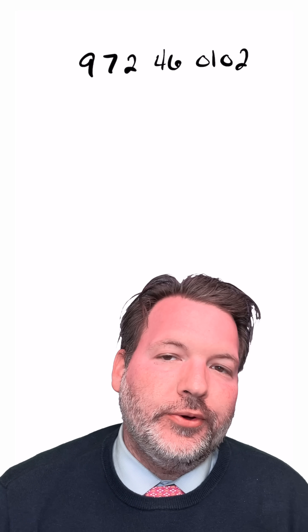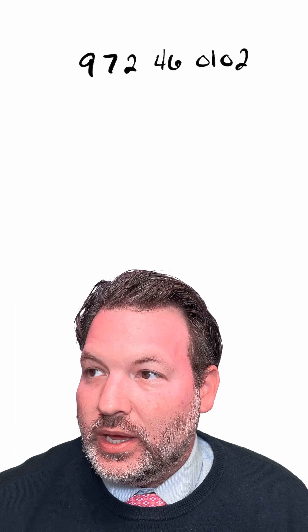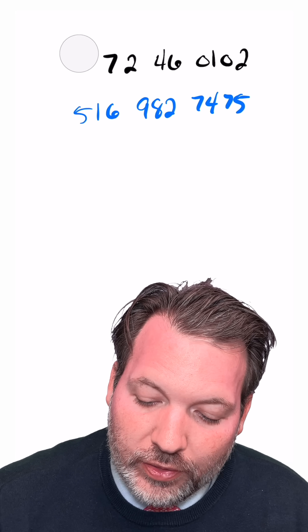There's this thing people say about pi sometimes: that you will be able to find any string of digits you want somewhere in pi. If you have a particular social security number, like 972460102, that string of digits is going to be somewhere in pi. While this is likely true because the strings of digits named are relatively small — just 10 digits — it's not something we know to be true because pi is not proven to be normal.